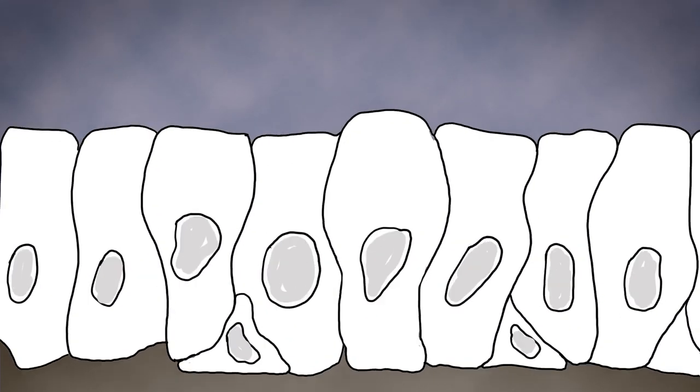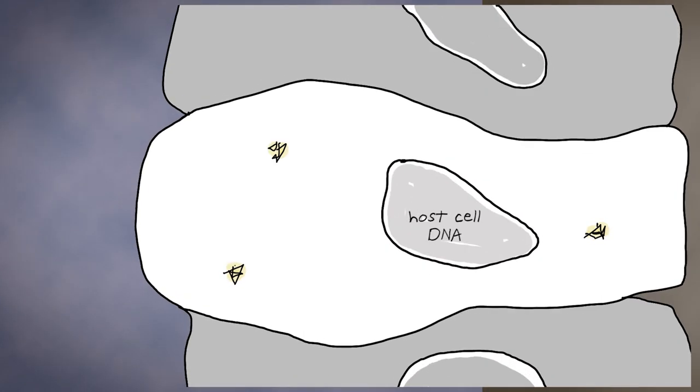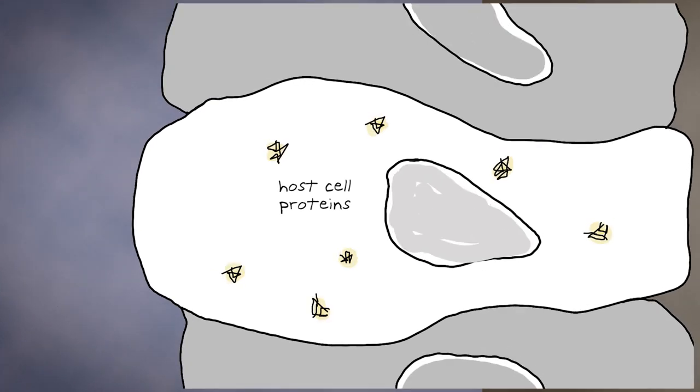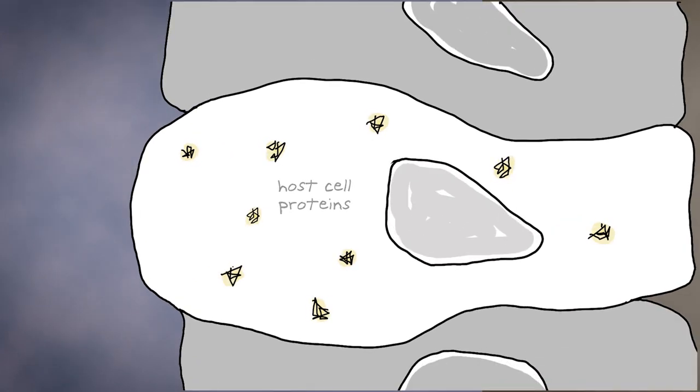Normally, a cell creates proteins from instructions coded within its own DNA. These proteins allow the cell to carry out its designated function.